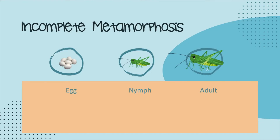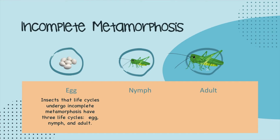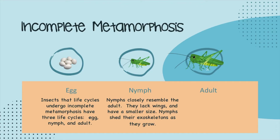Incomplete metamorphosis. Insects whose life cycles undergo incomplete metamorphosis have three life stages: egg, nymph, and adult. The nymph stage closely resembles the adult — they lack wings and have a smaller size. Nymphs shed their exoskeletons as they grow. And then the adult phase: adult insects focus their energy on survival and protection, so they can then lay eggs and start the life cycle process again for the next generation, of crickets in this case.